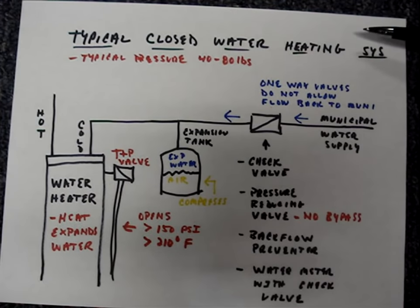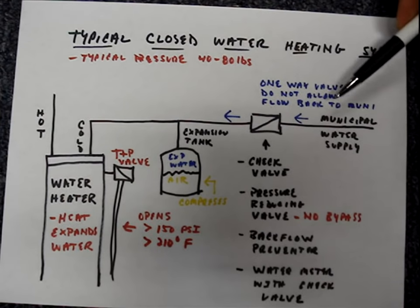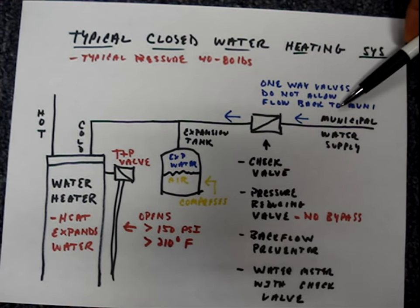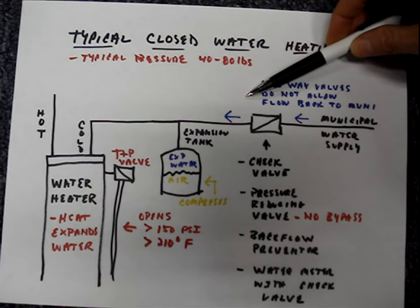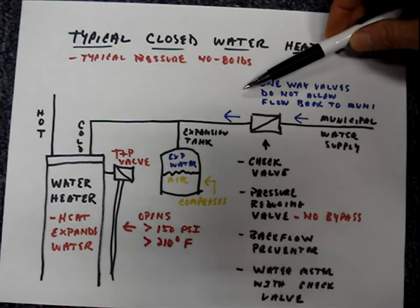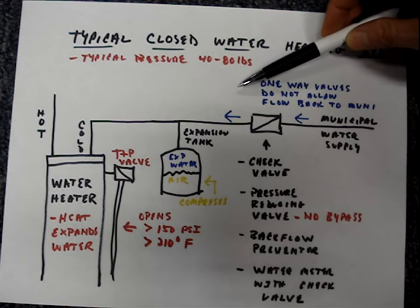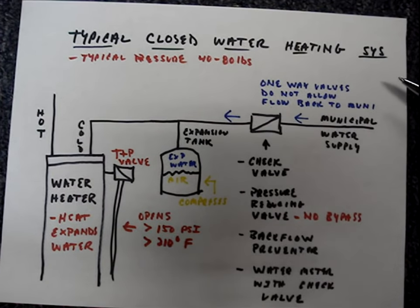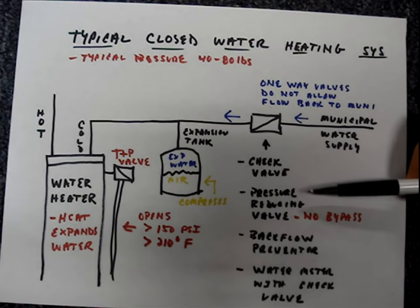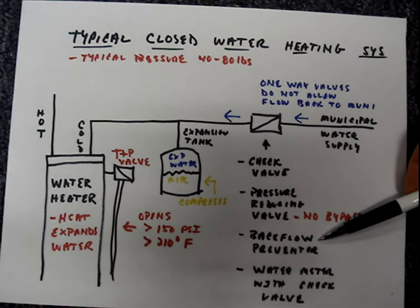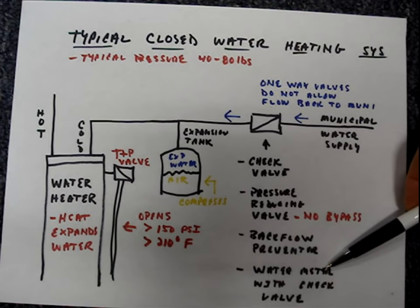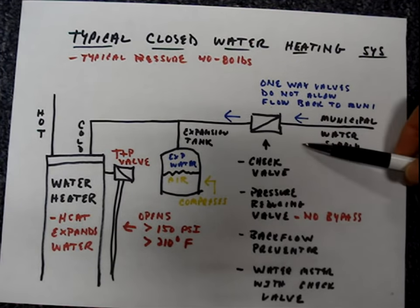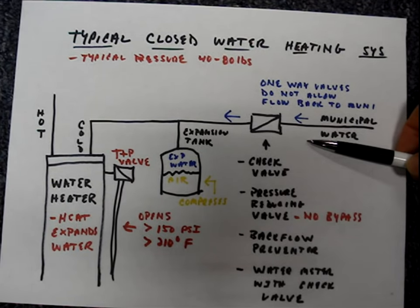A closed water heating system has a one-way valve. The valve allows water to flow from the municipal water supply and into your home's water system. If working properly it won't allow water from your home's water system to flow back into the municipal supply. The one-way valve could be a check valve, a pressure reducing valve with no bypass, a backflow preventer, or a water meter that has a check valve contained in it. Typically you'll find one of these valves located where the water flows into your home, somewhere near the water meter.